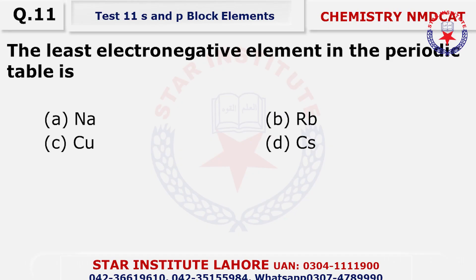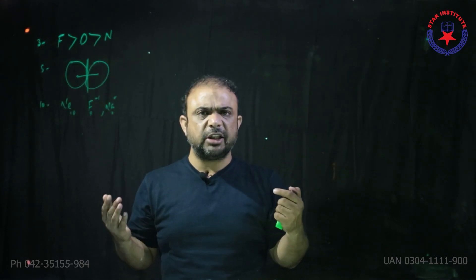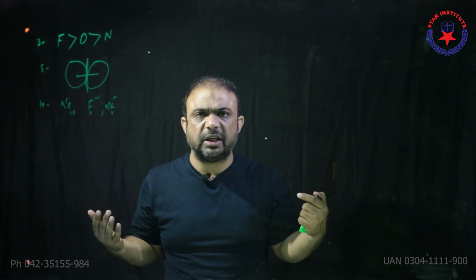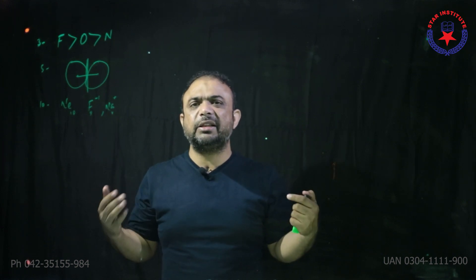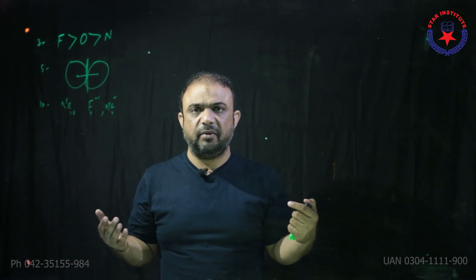Question number 11: The least electronegative element in the periodic table is cesium. Simply put, the most electropositive element is expected to be the least electronegative.